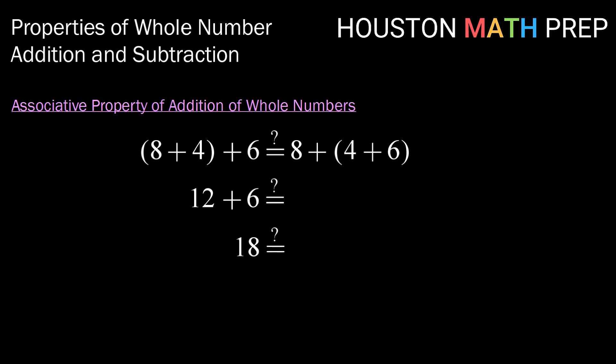Now, if instead we were to group the 4 and the 6 first, which we might want to do based on our strategy of making 10 to make this a little bit easier, grouping the 4 and the 6, of course, we get 10. So 8 plus 10 is 18. You can do this with any group of numbers and show your students that no matter what numbers I pick, it will be the same on the left and the right. And that gives us our associative property of addition.